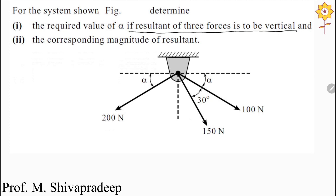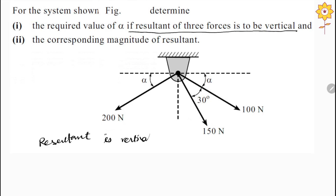The condition given is that the resultant is vertical. We know that when the resultant is vertical, summation of F of y will be equal to R, and summation of F of x will be equal to 0. This is the condition for the statement that the resultant of three forces is to be vertical.